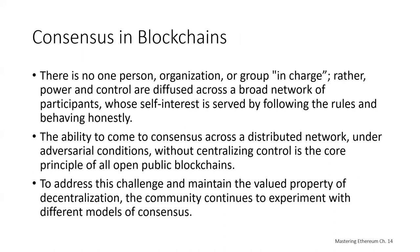This ability to come to consensus across a distributed network under adversarial conditions without centralized control is the core principle of open public blockchains. The community continues to experiment with different models of consensus — there have probably been 30 to 50 different models, all of which draw lines in different places. This lecture is going to focus on two: proof of work and proof of stake, and their expected impact on smart contract blockchains such as Ethereum.